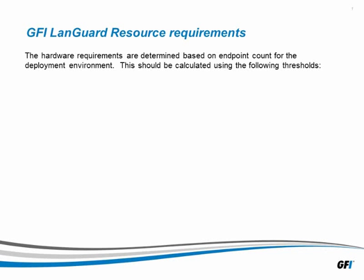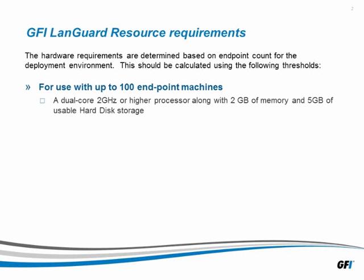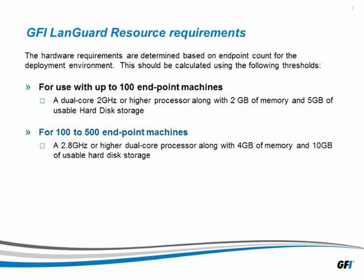For use with up to 100 endpoint machines, a dual-core 2 GHz or higher processor, along with 2 GB of memory and 5 GB of usable hard disk storage space is needed. For 100 to 500 endpoint machines, a 2.8 GHz or higher dual-core processor, along with 4 GB of memory and 10 GB of usable hard disk storage space is needed.